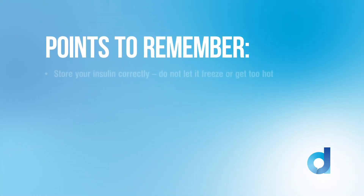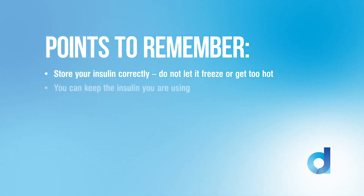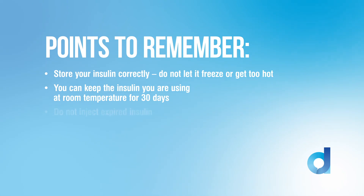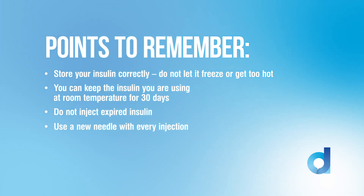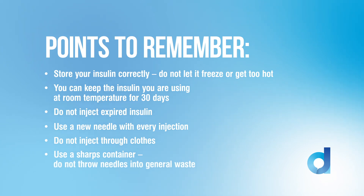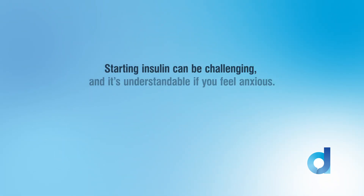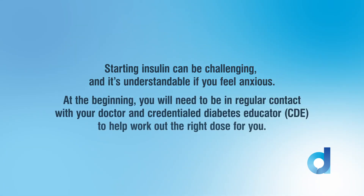Points to remember: Store your insulin correctly — do not let it freeze or get too hot. You can keep the insulin you are using at room temperature for 30 days. Do not inject expired insulin. Use a new needle with every injection. Do not inject through clothes. Use a sharps container and do not throw needles into general waste. Starting insulin can be challenging and it's understandable if you feel anxious. At the beginning, you will need to be in regular contact with your doctor and credentialed diabetes educator (CDE) to help work out the right dose for you.